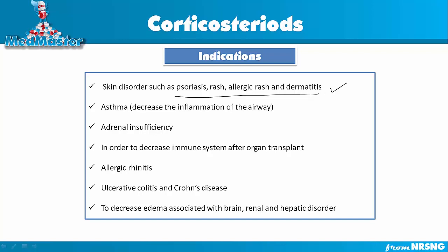We also know corticosteroids dilate the bronchial vessels and decrease inflammation, so they are used for asthma. Asthma is inflammation in the bronchi — in the airway. Giving this medication to a patient will decrease the inflammation and dilate the bronchial muscles to help with asthma.